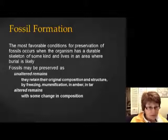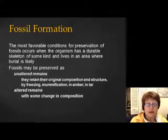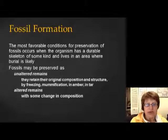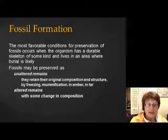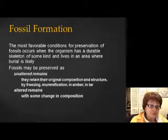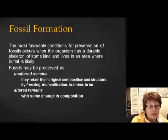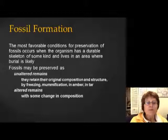When fossilization does happen accidentally or with very good luck, it could be preserved as unaltered remains — meaning they have not changed, retaining their original composition. That could happen by freezing, mummification, being trapped in amber, or in tar. But most commonly we have altered remains where the composition changes over time.